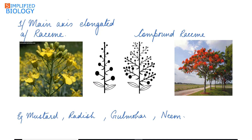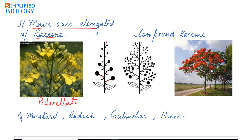We'll start with main axis elongated, in which the first type is a raceme. In a raceme, the main axis never terminates by a flower, and the flowers develop in acropetal succession. These flowers are pedicellate, meaning pedicels or stalks are present.